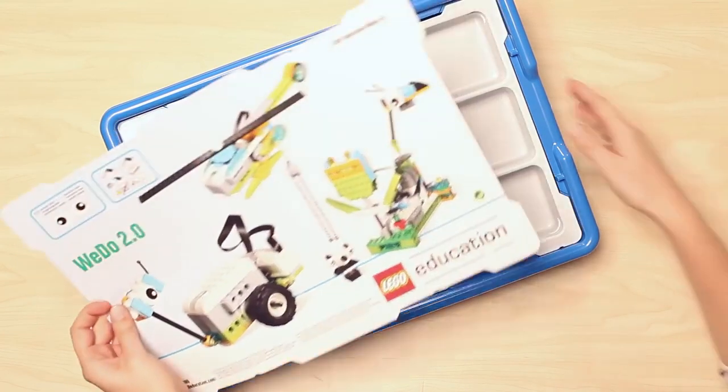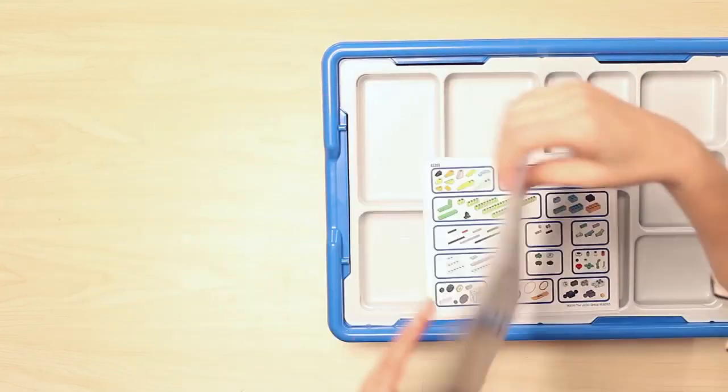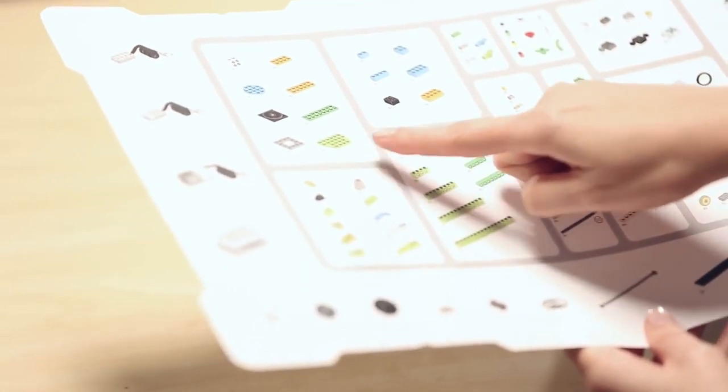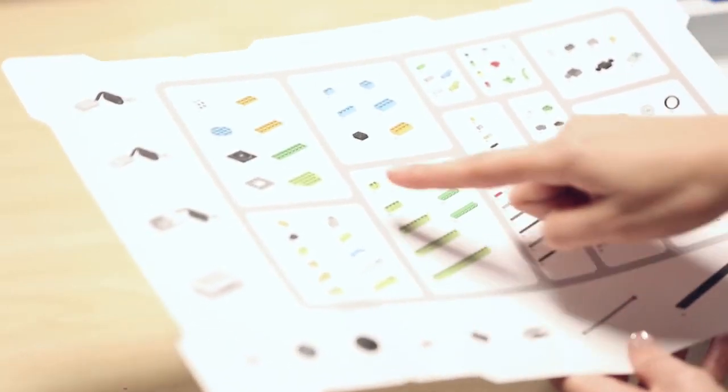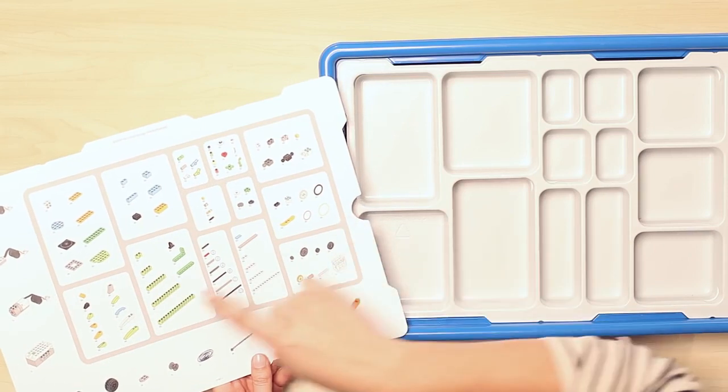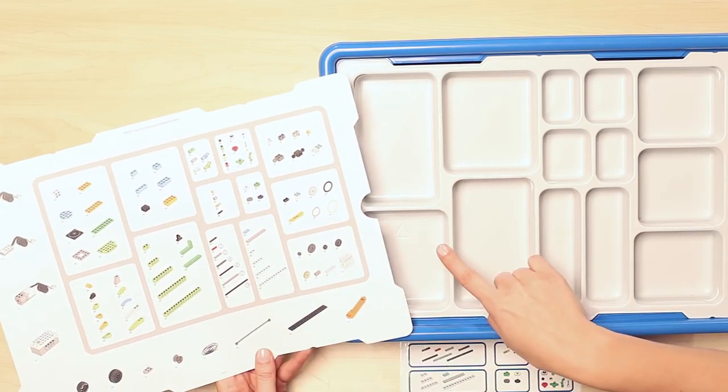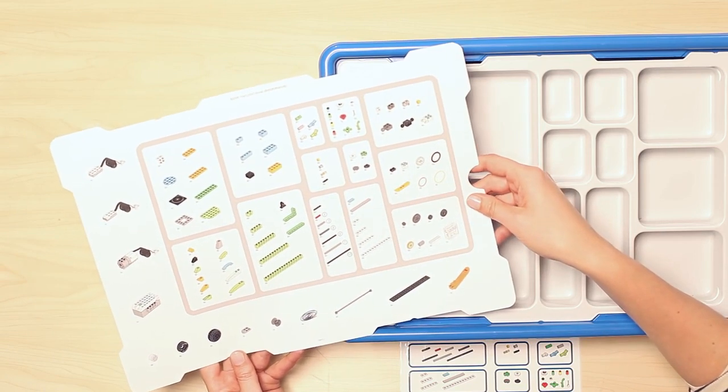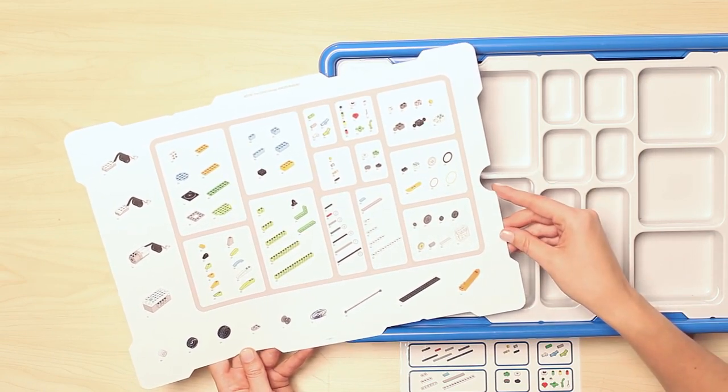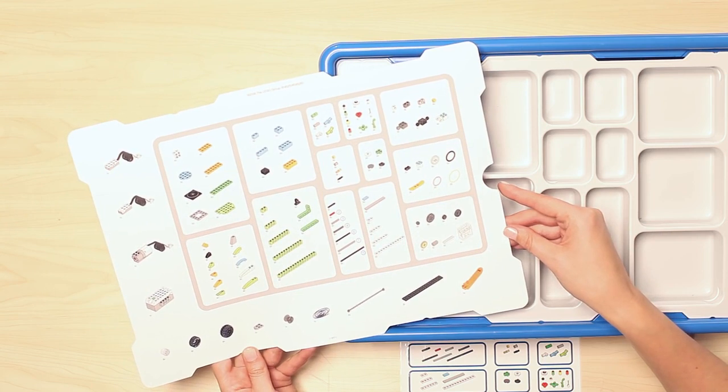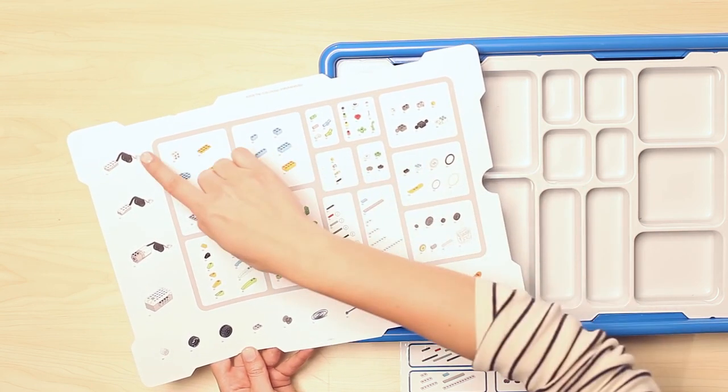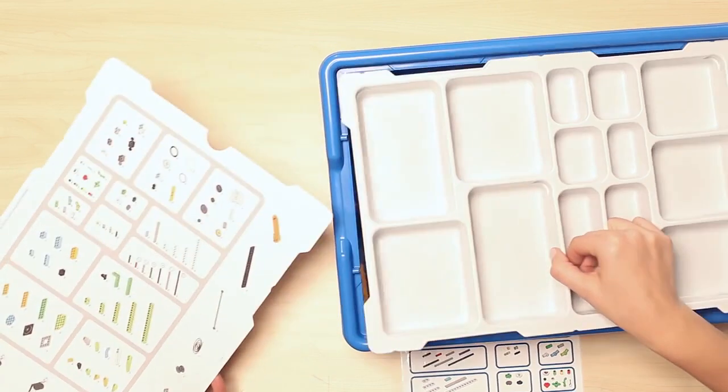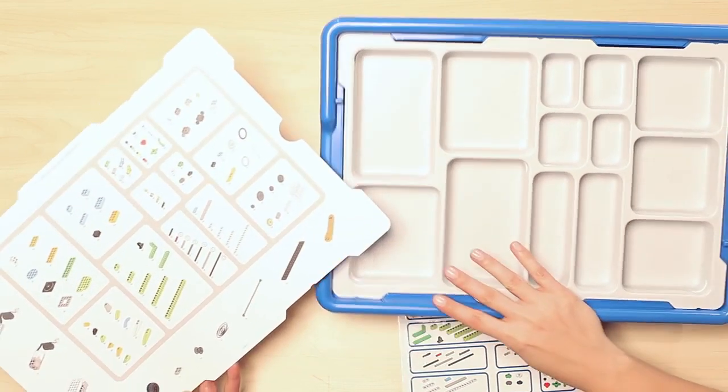If you flip the card around, you'll notice that this not only details every single element included in the core set, but also is designed to mirror the sorting tray compartments, acting as a visual guide to getting elements organized for the first time. This provides a handy tool for keeping the bricks sorted in the future, which greatly helps with classroom management. The elements not shown in a sorting compartment are larger and are to be stored under the sorting tray in the bottom of the bin.